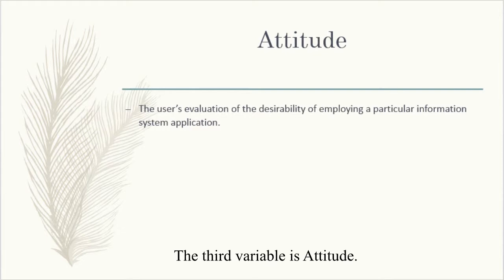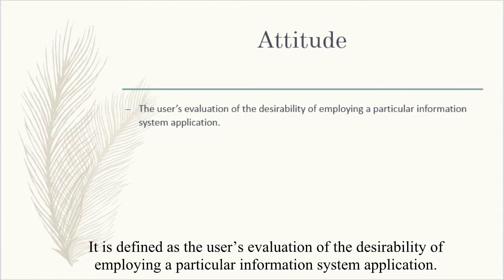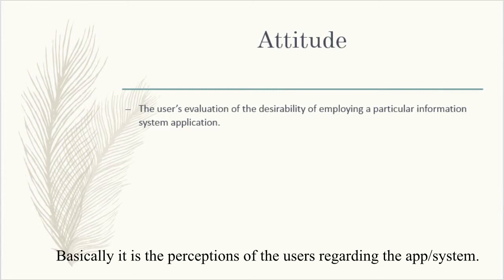The third variable is Attitude. It is defined as the user's evaluation of the desirability of employing a particular information system application. Basically, it is the perceptions of the users regarding the app or the system.